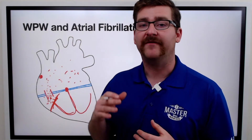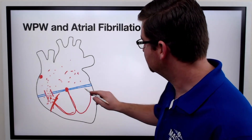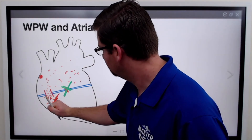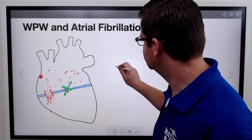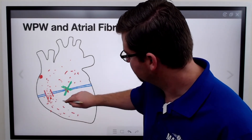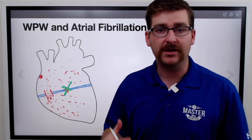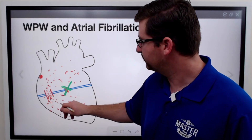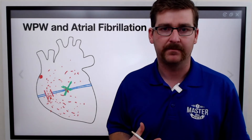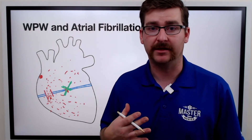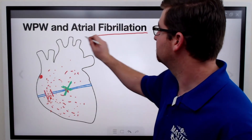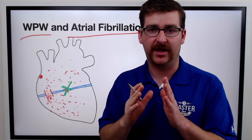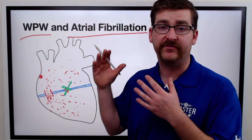So if we have afib and WPW and we use adenosine — cutting out that AV node for 6 to 10 seconds — all that electricity that was being log jammed is going to continue through. That electricity can end up causing ventricular fibrillation because all that afib above it is basically leaking into the ventricles for those 6 to 10 seconds. This is deadly. So it's super important: if a patient has WPW and afib, we cannot give adenosine — especially if they have a wide, complex, irregular tachycardia, which is indicative of WPW with afib.